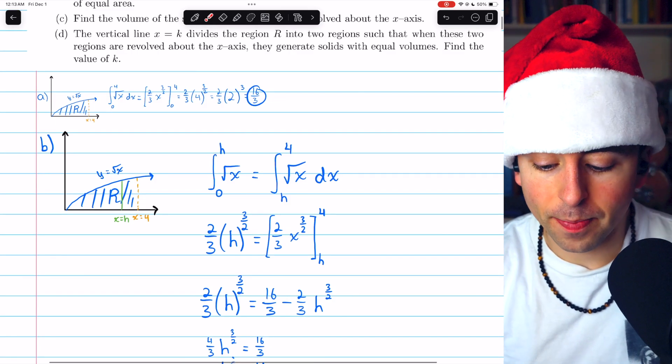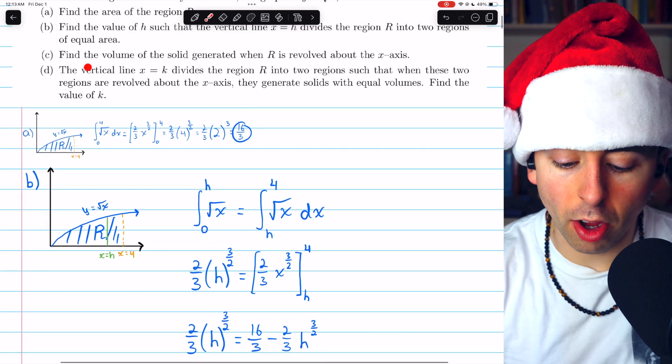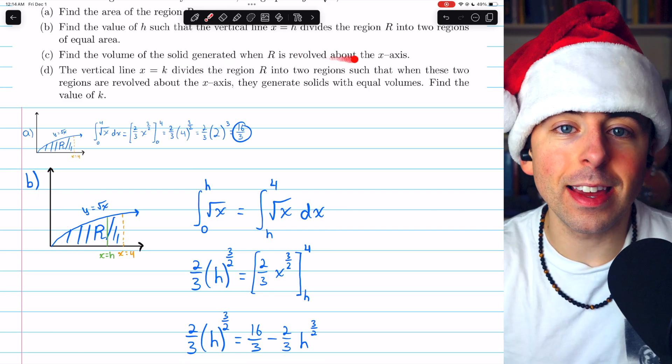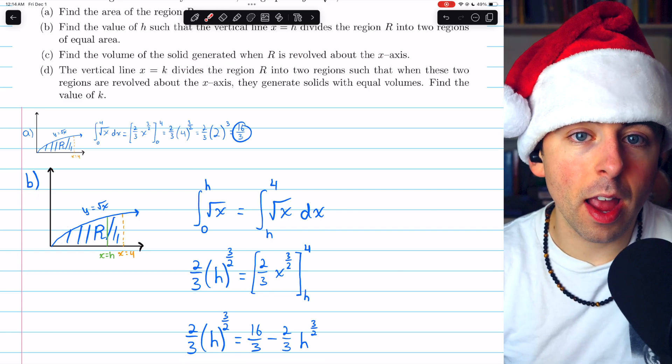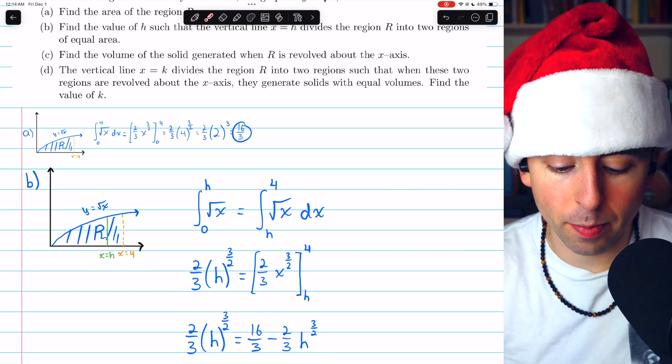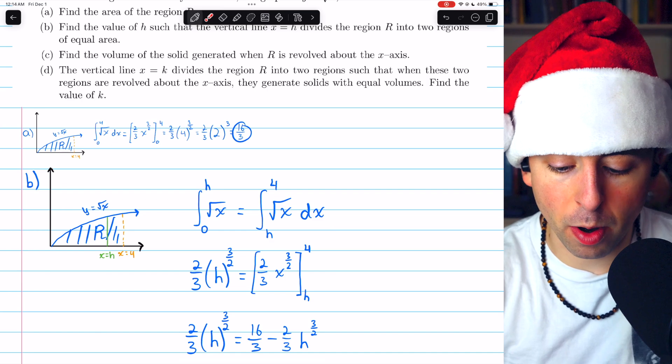Let's move on then to part C. Find the volume of the solid generated when R is revolved about the X axis. So this is a pretty standard volume of a solid of revolution problem. So let's set up the appropriate integral.